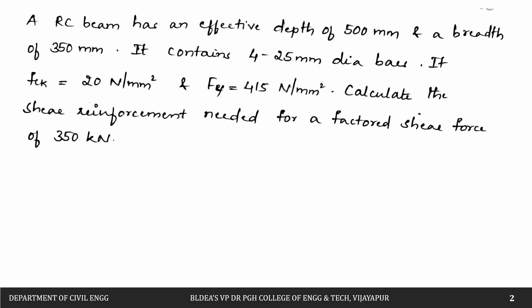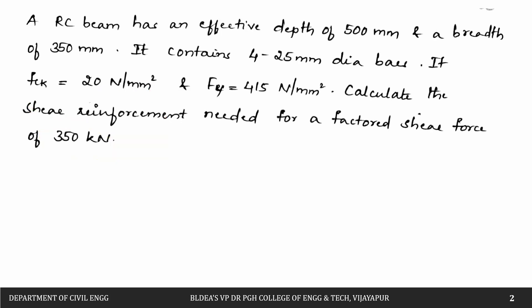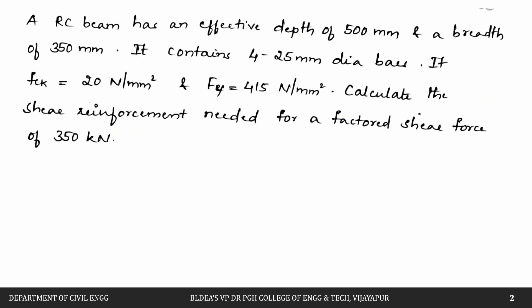There are two types of problems in this topic. One is where the shear force is given and we calculate the shear reinforcement. The other is where the shear reinforcement and section details are given, and we calculate how much factored shear force the section can carry. Now let us calculate the shear reinforcement for a given factored shear force for different grades of steel and concrete.